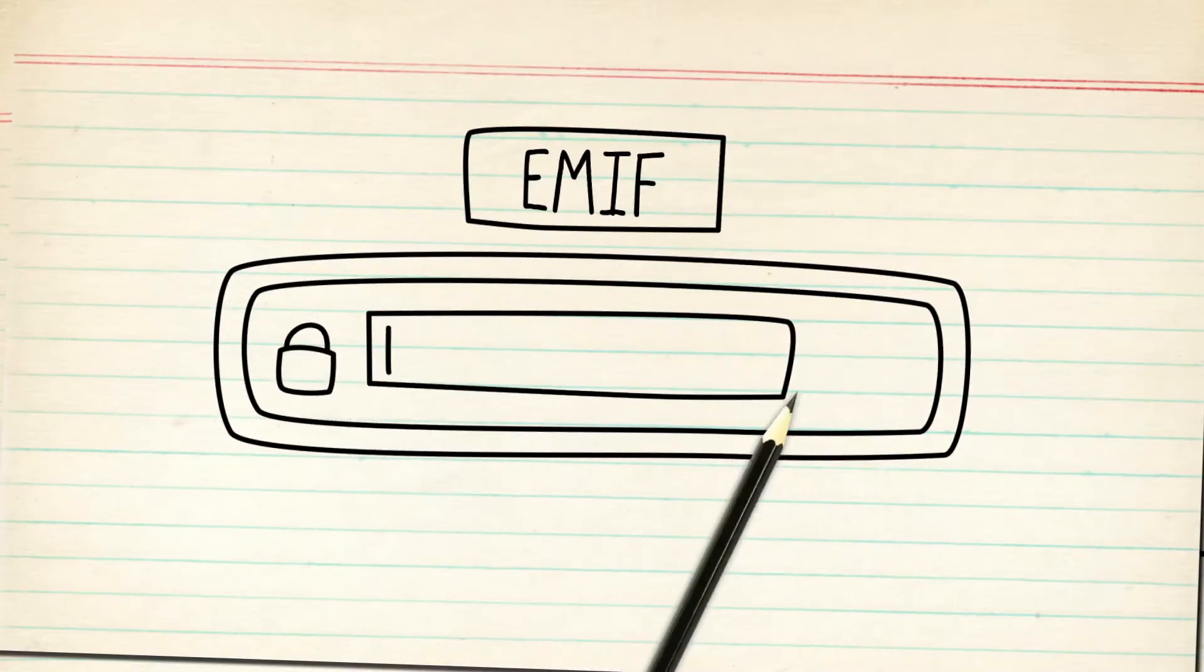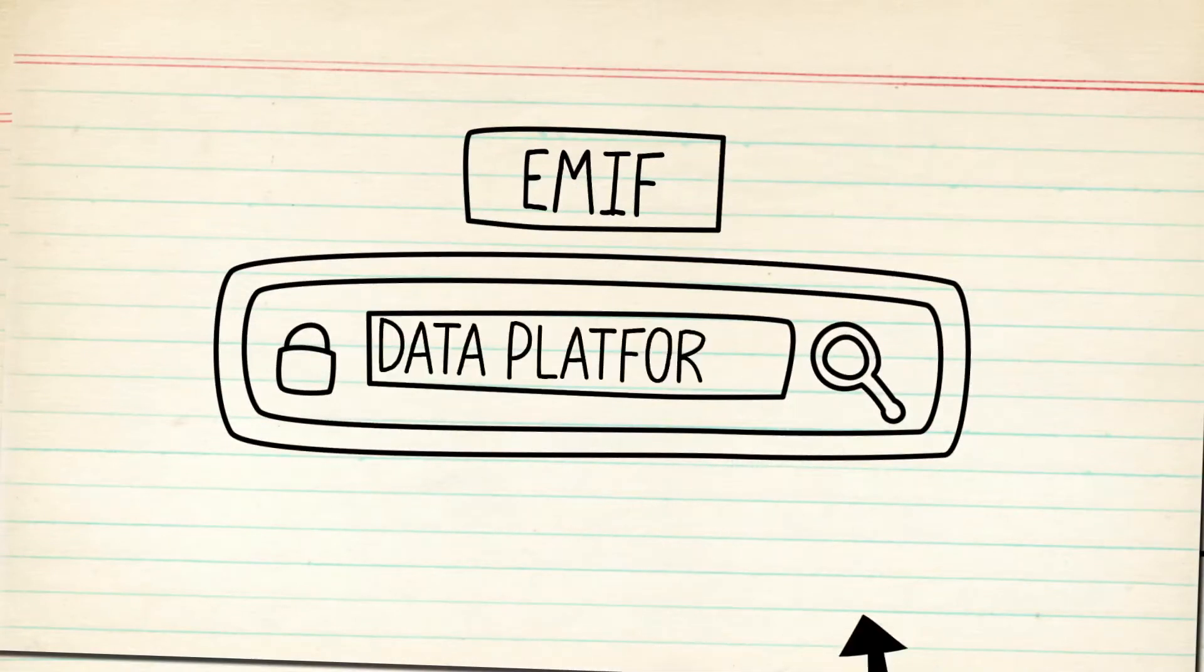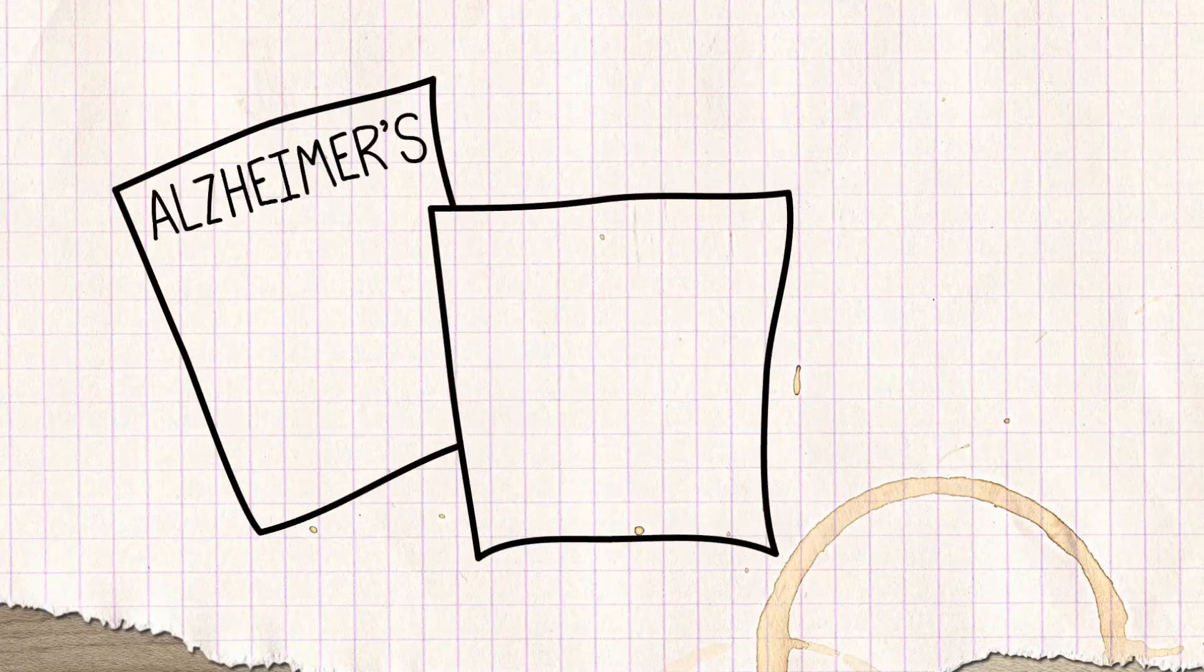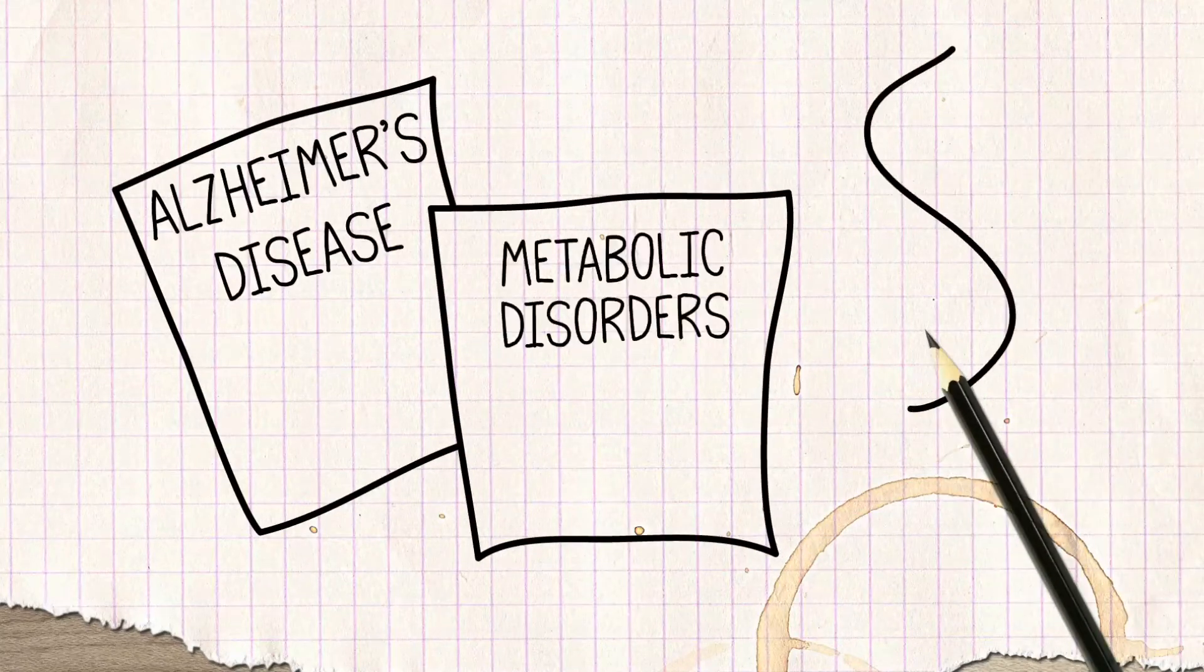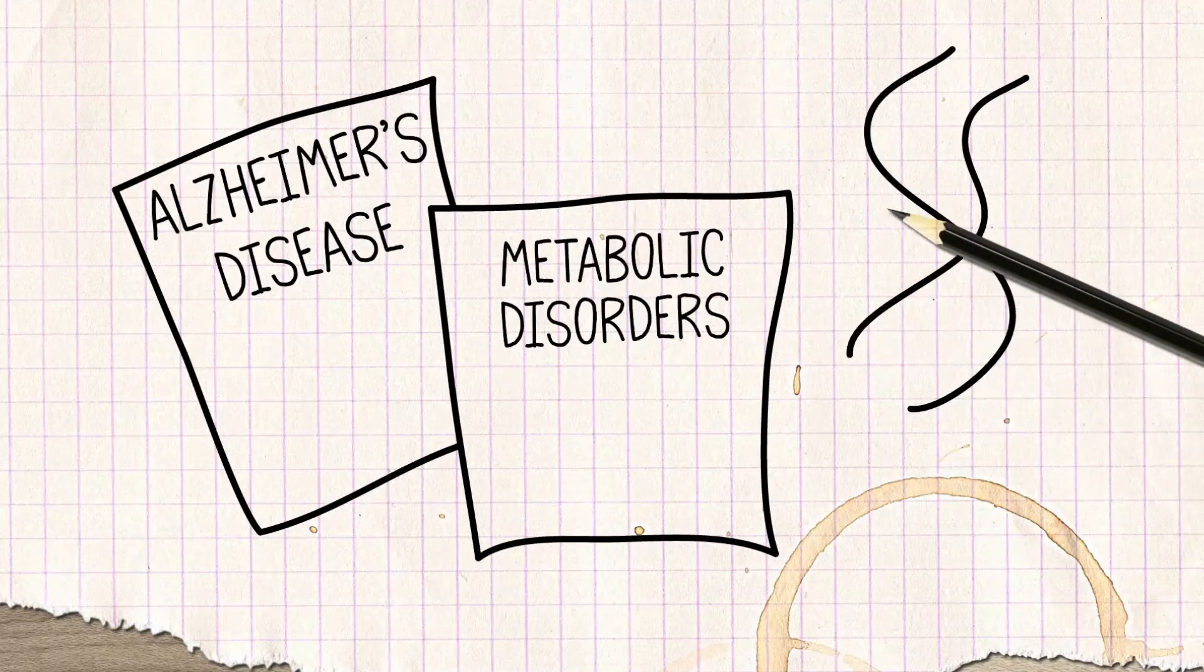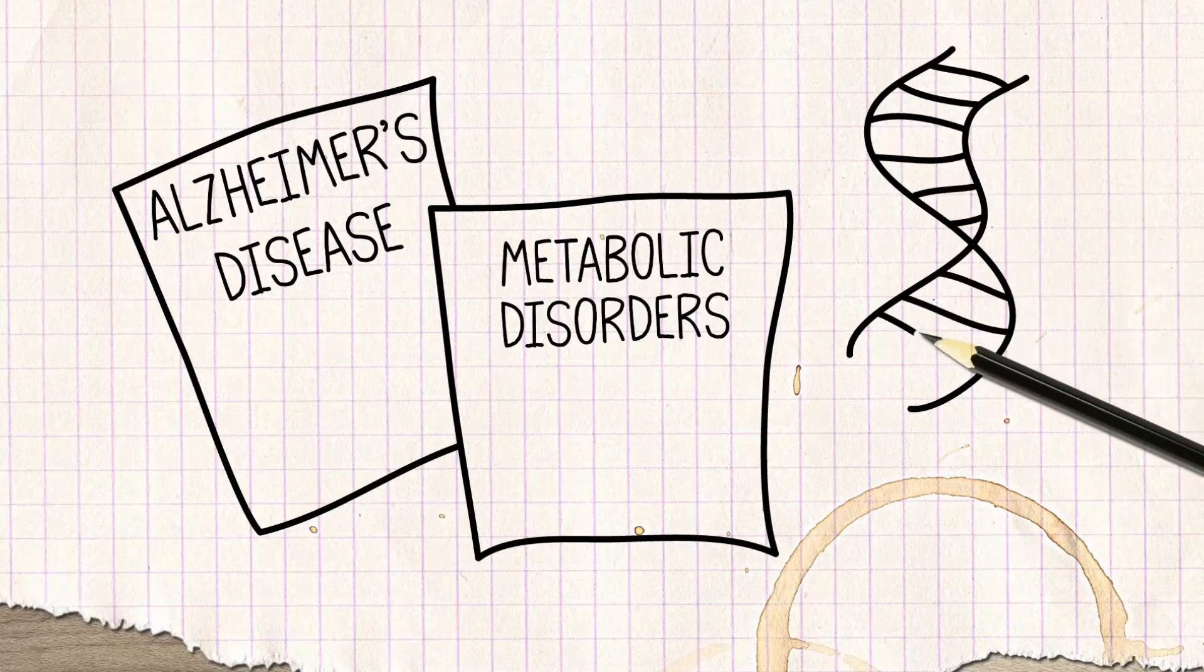E-MIF is developing a secure online research data platform, but also has proof-of-principle work in two disease areas, Alzheimer's disease and metabolic disorders, pursuing development of early biomarkers.